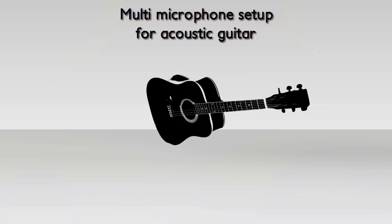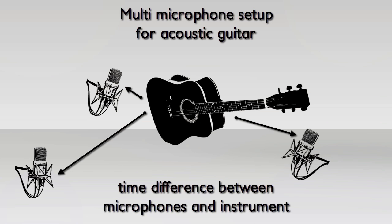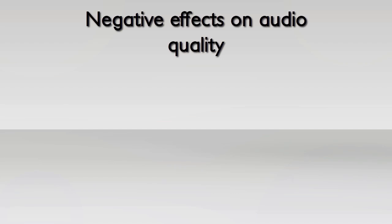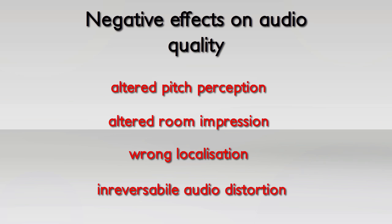This results in a heavy distortion of the original signal. Keep in mind that this horrible distortion is always present when you record a sound source with more than one microphone whenever the distances of the microphones to the sound source are not equal — and that's the case in most situations. The negative consequences are an altered pitch perception, an altered room impression, localization problems, and of course the distortion itself. One of the misleading concepts is to call it a phase offset or phase issue.